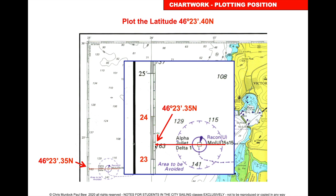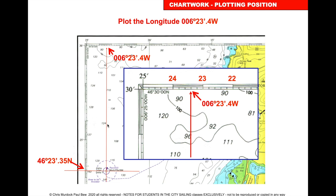Put a small pencil mark there. Then take your plotter and place it at 90 degrees to the side of the chart and draw a line through that pencil mark at 90 degrees. Stand up and look straight down at the plotter to make sure it is truly 90 degrees. Get into the habit of doing this carefully, because a lot of mistakes later come from this line ending up wiggly.